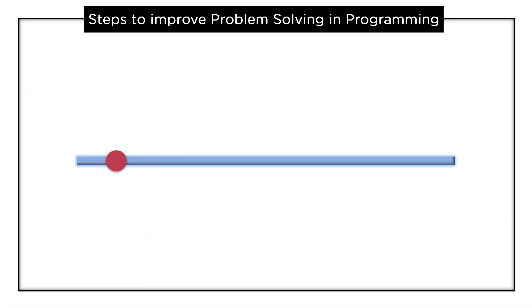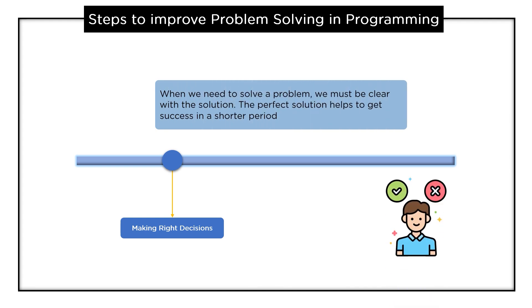Followed by that we have making right decisions. When we have to solve a problem we must be clear on the solution. The perfect solution helps to get success in a shorter period. Making the right decisions in the right situation helps people find perfect solutions quickly and efficiently. These skills also help to get more command over the subject.